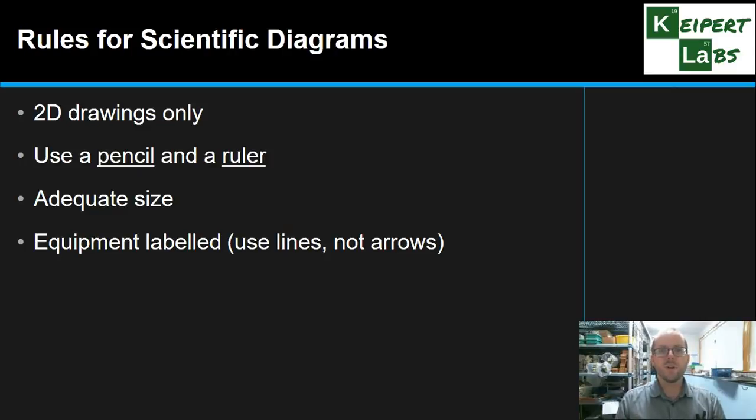And it's also important for us to label the equipment that we draw. And so we would be using neat printing alongside to print out the label of what it is. You know, beaker, Bunsen burner, retort stand. And then we connect that label to the item using a ruled line rather than an arrow. And so that line connects from the label to the item itself. Nice and neat, really easy to see what's what.